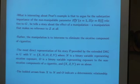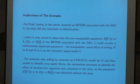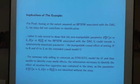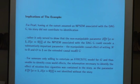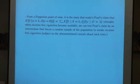What are the implications of the example? For Judah, having at the onset assumed NPSM associated with the DAG G, his story did not contribute to identification. Rather, it only served to show that the non-manipulable parameter of the NPSM associated with the DAG could encode a substantially important parameter, the manipulable causal effect of setting N to zero and O to one. For someone only willing to entertain the FSRG model for G, and thus unable to identify cross-world effects, the information necessary to identify the effect of nicotine cigarettes was actually contained in the story. As the parameter, this guy is not identified without the story. But with the story, I get a new graph. And there, that parameter, the effect of N equals zero and O equals one is identified, and you can show from marginalization from that graph is exactly this parameter.